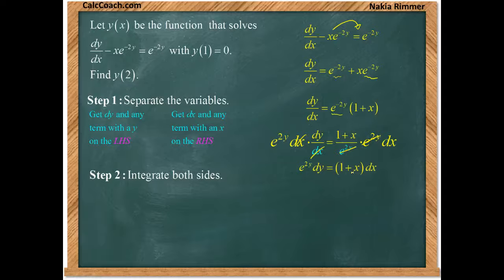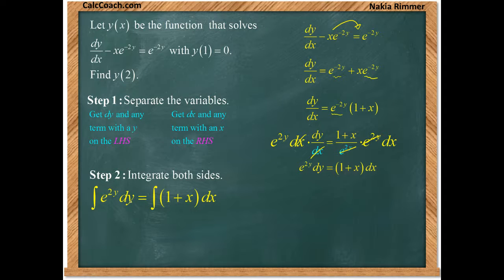The second step is to integrate both sides. So we're integrating e to the 2y and we're integrating 1 plus x. Whenever you integrate e to a constant times y, you have to divide by 1 over that constant to balance out the chain rule. The right hand side's anti-derivative is x plus x squared over 2. They both have a c but we combine them on the right hand side as plus c.